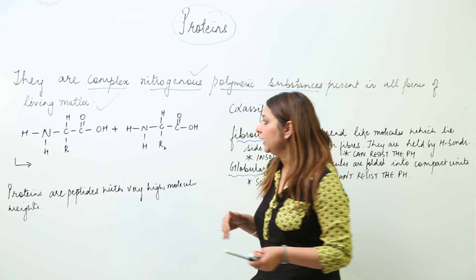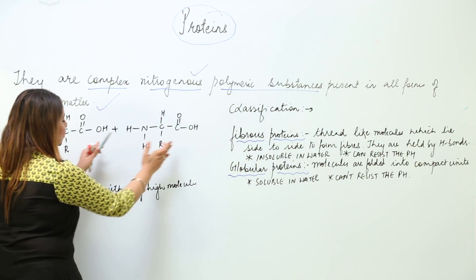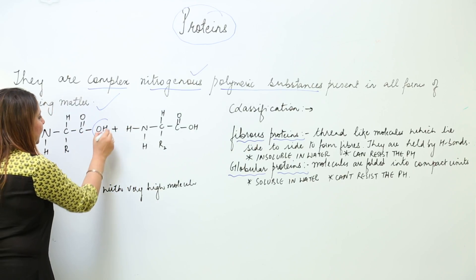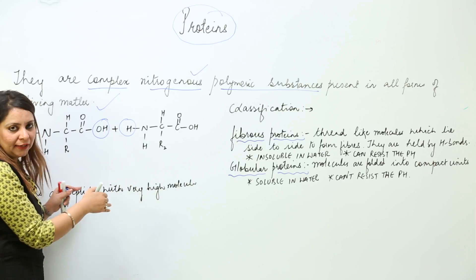So how can we actually form them? Suppose you have these two amino acids. Then just with the elimination of a small molecule, that is water, we can have a protein.